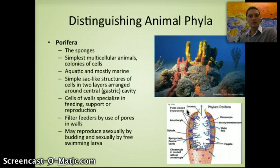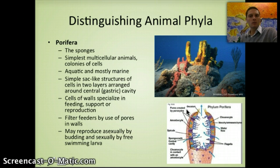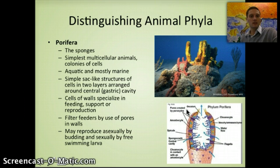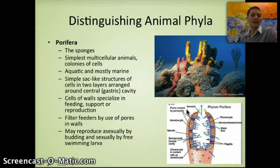The first animal phylum is Porifera, which includes the sponges. They are mostly aquatic and marine, and are filter feeders that don't really move. They get nutrients by allowing water to move through them and filtering out food. They have very specialized cell walls for feeding, support, and reproduction, and have pores for filter feeding. They may reproduce asexually by budding or sexually by free-swimming larvae, but usually reproduce asexually.